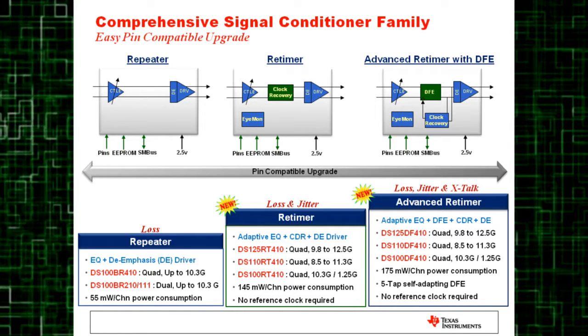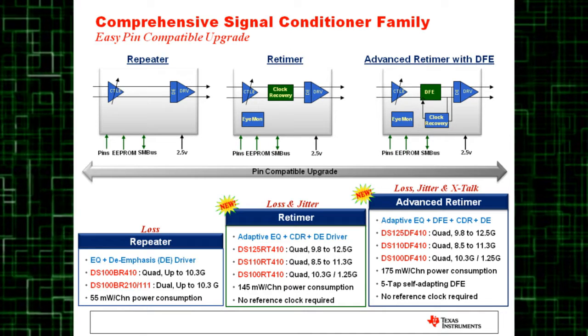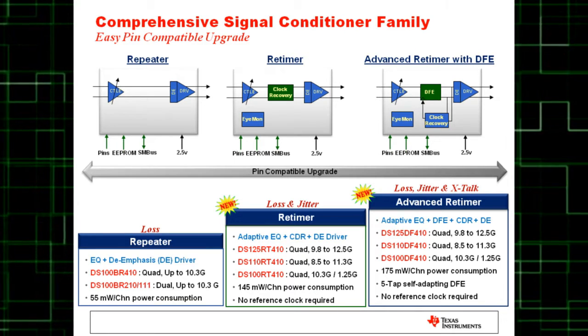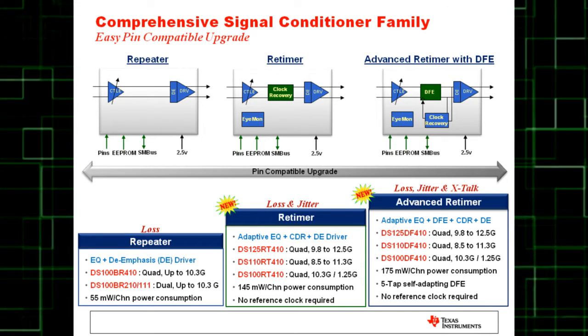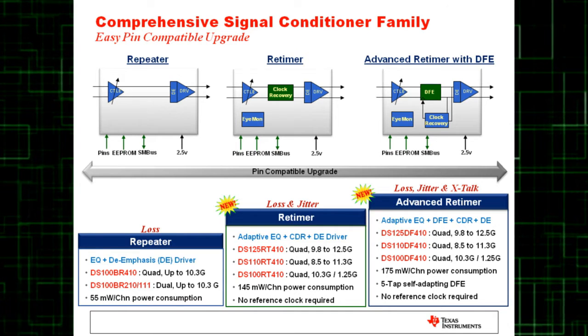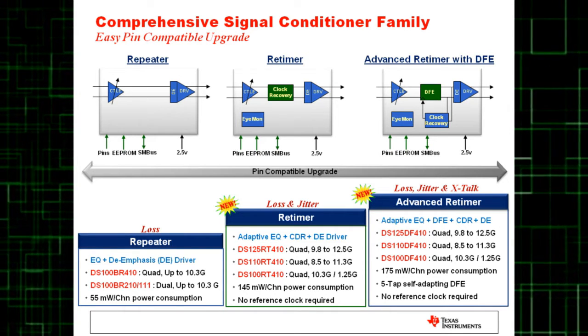An advanced retimer includes a 5-tap DFE, or decision feedback equalizer, to deal with the crosstalk problem. All three devices are offered in a pin-compatible fashion so system designers can easily migrate up or down depending on their performance or cost budget.